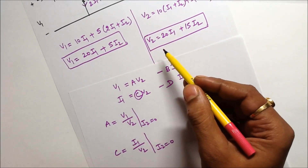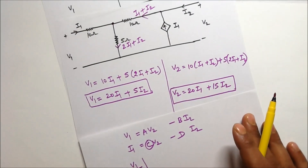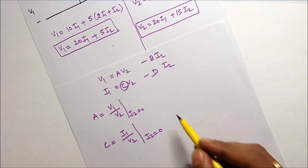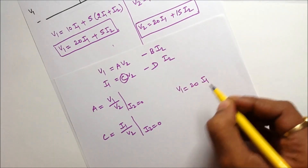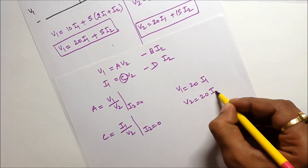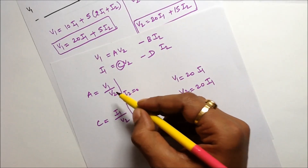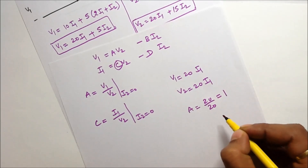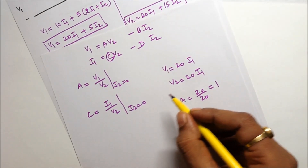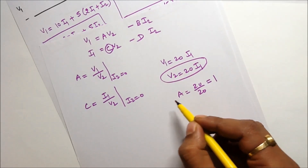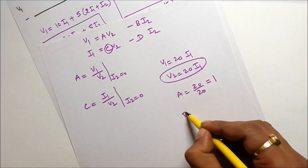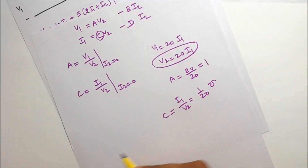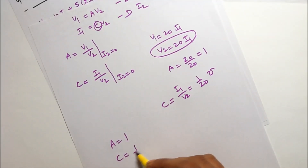Using these two equations, there is no need to look at the circuit to find out the ABCD parameters. Put I2 equals 0 in both equations: you get V1 equals 20I1 and V2 equals 20I1. The ratio V1 upon V2 gives A equals 20 upon 20, which equals 1 (unitless). For C, the ratio I1 upon V2 equals 1 upon 20. So A equals 1 and C equals 1/20.